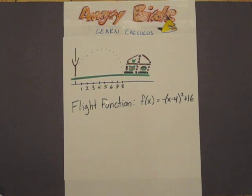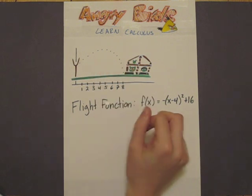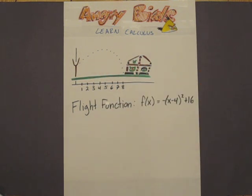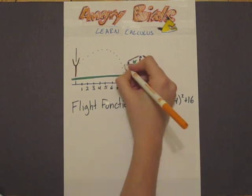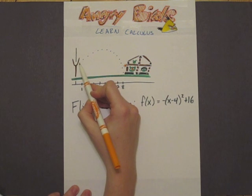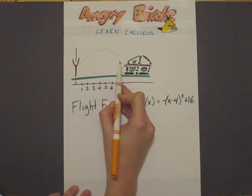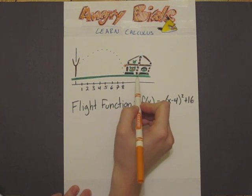We have figured out that the angry birds are going to need a little help from Calculus in order to take down the pigs. We need to determine at what moment we should tap the screen so that this yellow bird is going to hit the house in the desired location. We know that we need to tap the screen at some point when the bird is on the downward trajectory so that it's aimed towards the house.